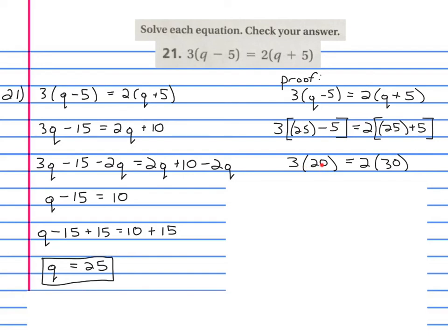...because remember, now that we just have 25 minus 5 equaling 20, there's no more parentheses inside, so the outside brackets go back to being just parentheses. 3 times 20 equals 2 times 30.